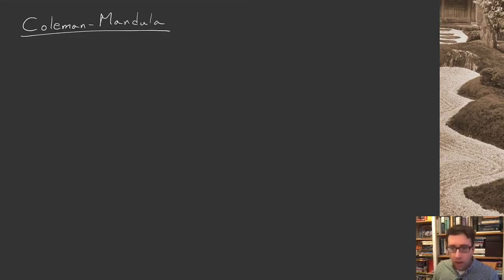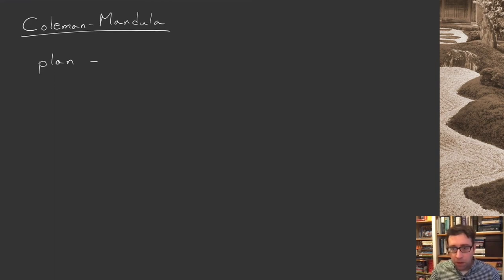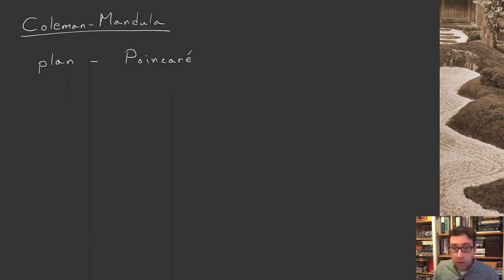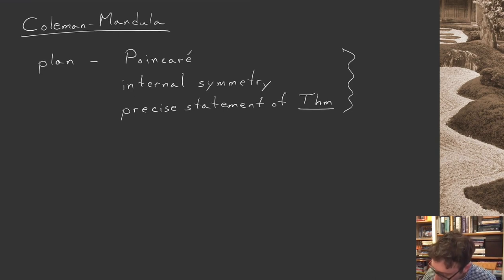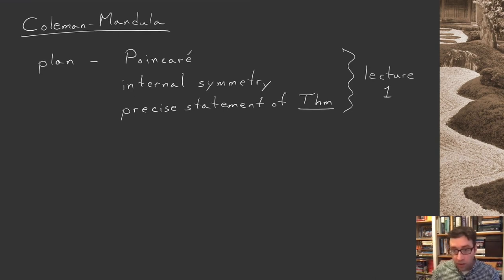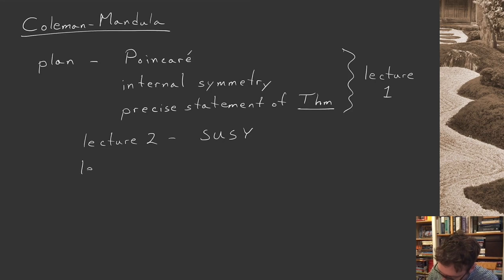Let me begin by giving you a plan for the next three mini-lectures. To explain what the Coleman-Mandula theorem says, I first want to tell you in more detail about the Poincaré group and about internal symmetry groups. With those two things in hand, I can give you a precise statement of the theorem — that's our first mini-lecture. Then lecture two will talk about how supersymmetry is a loophole, and lecture three will discuss how conformal symmetry is a loophole.